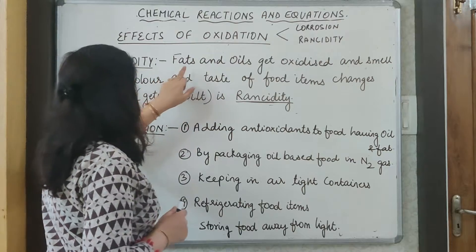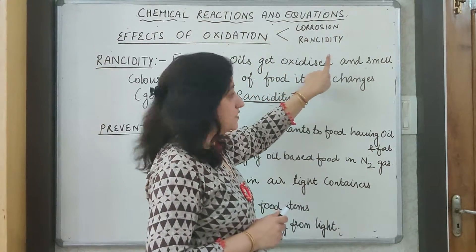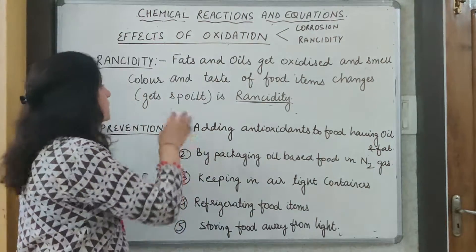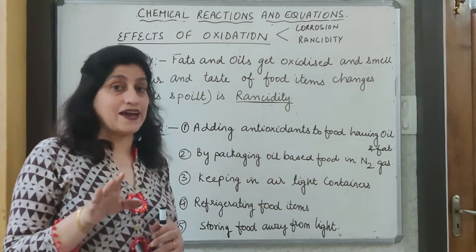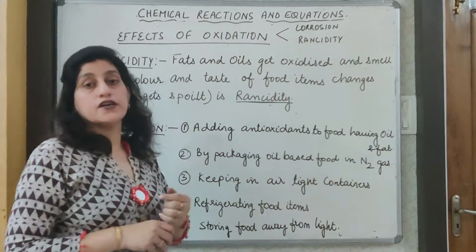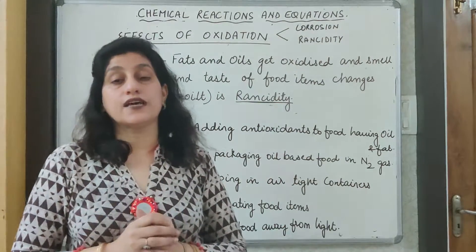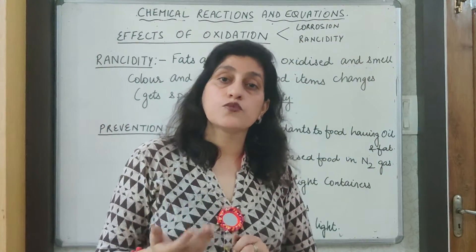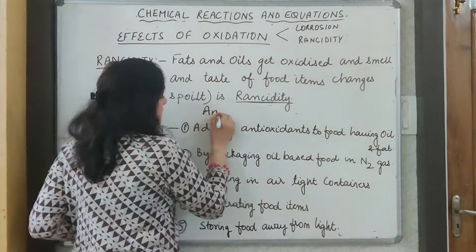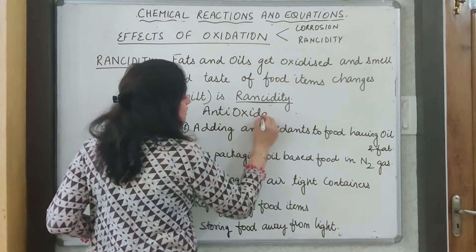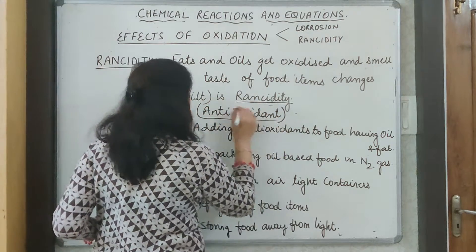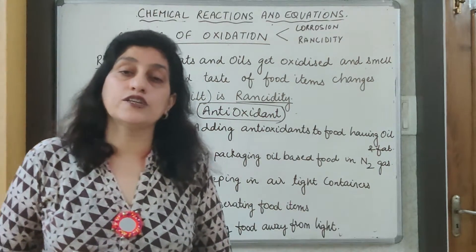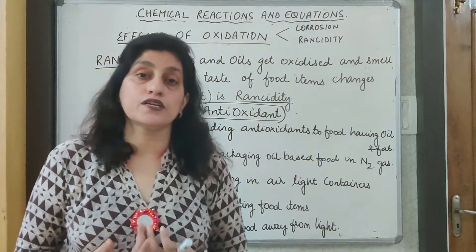So now let's define rancidity: fats and oils get oxidized, and the smell, color, and taste of the food items change. When oxidation of fats and oils takes place, they get spoiled. This phenomenon is called rancidity. What brings about rancidity is oxidation, and to counter that we have antioxidants. You have commonly heard 'food rich in antioxidants' — because antioxidants maintain the value and healthy properties of food items.